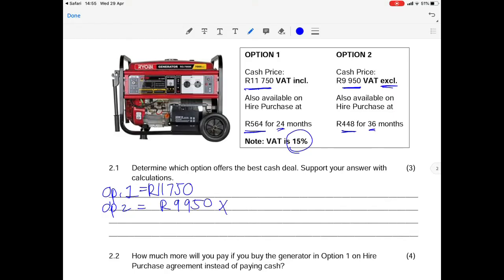Option 2 cash price is R9,950 but that is excluding VAT so we need to add VAT by multiplying by 115 over 100, where that 115 refers to the 15% VAT. We get a total for option 2 of R11,442.50. So it is marginally cheaper than option 1 which means that option 2 offers the best deal.